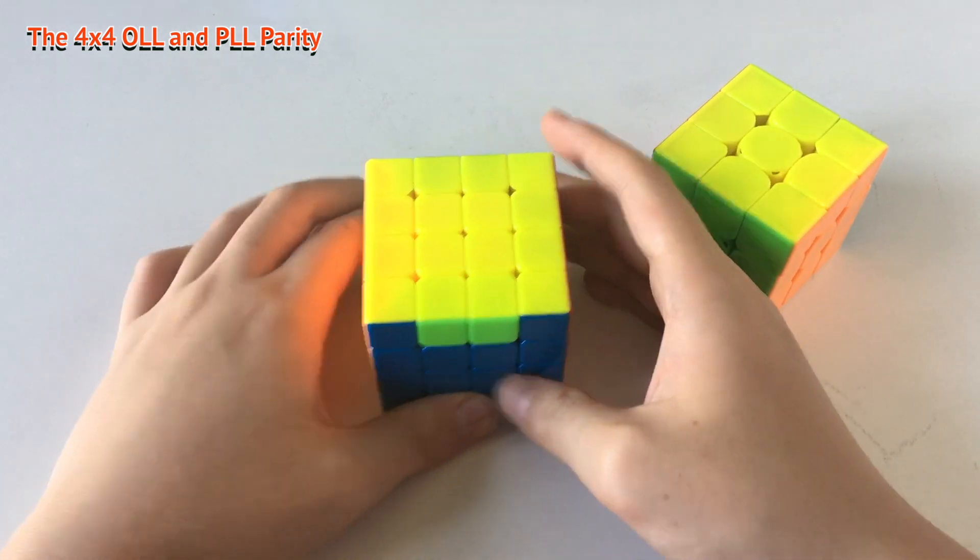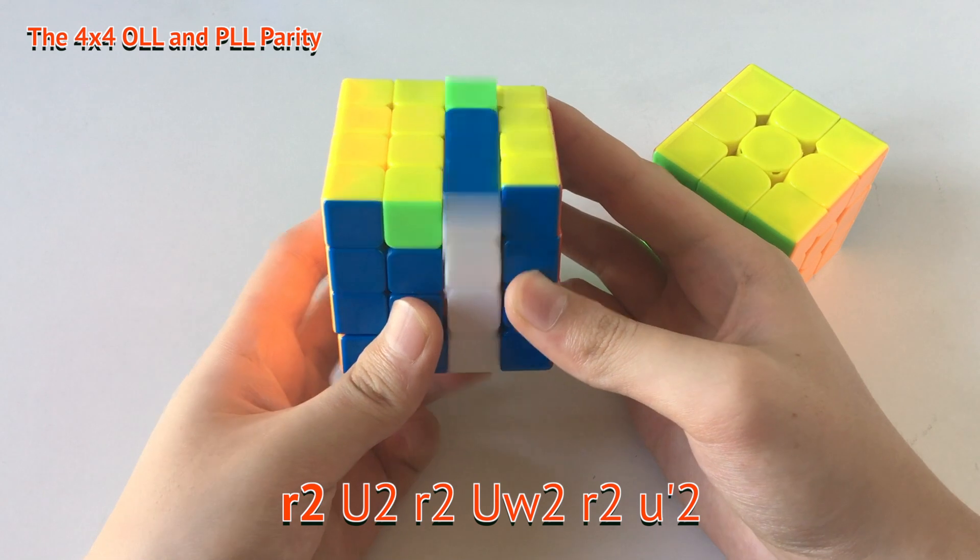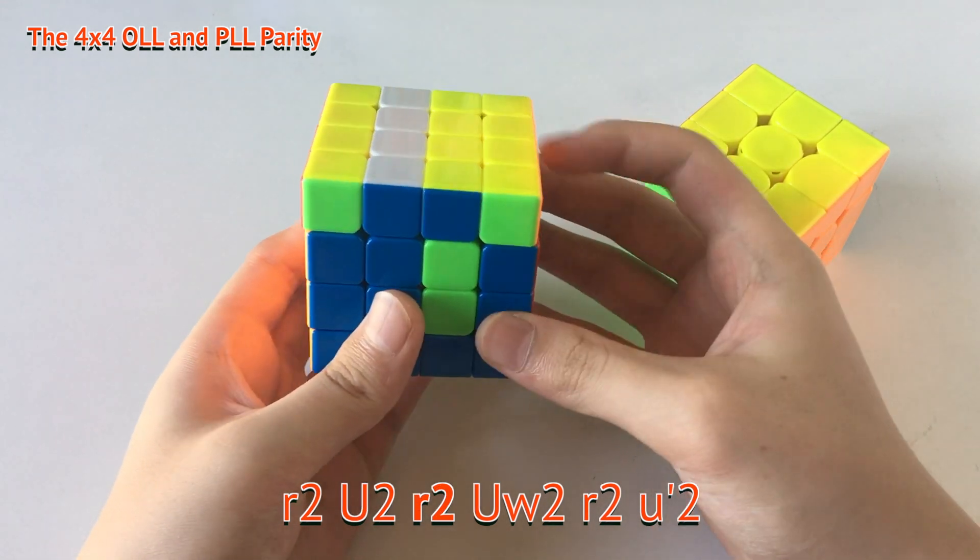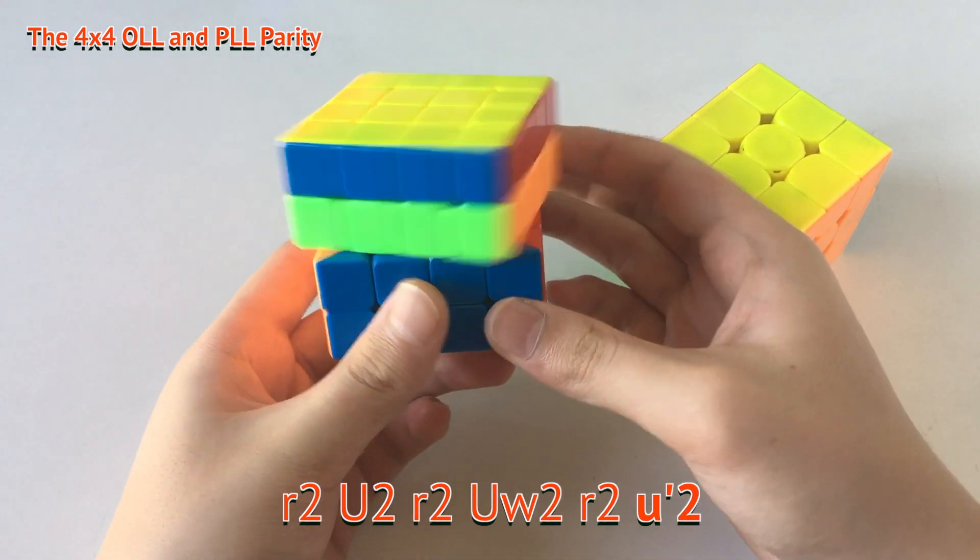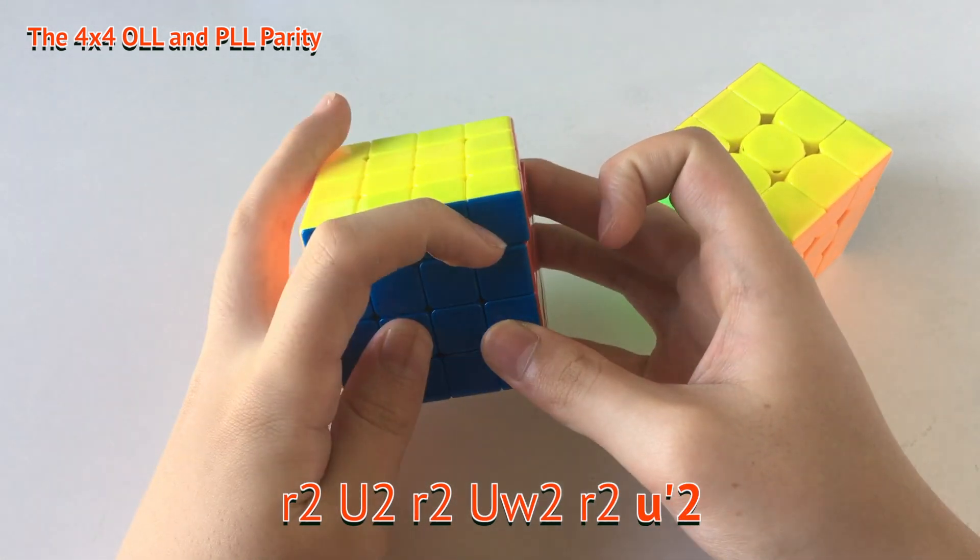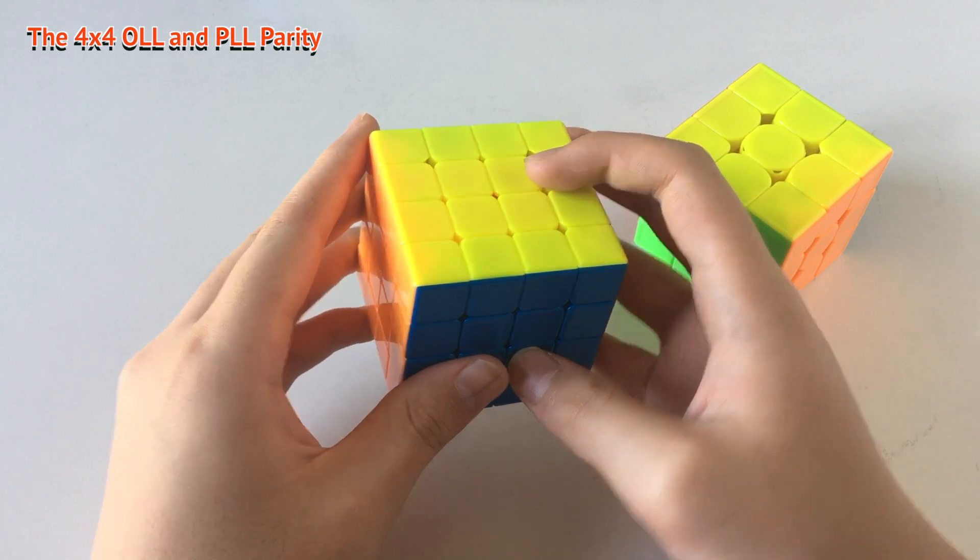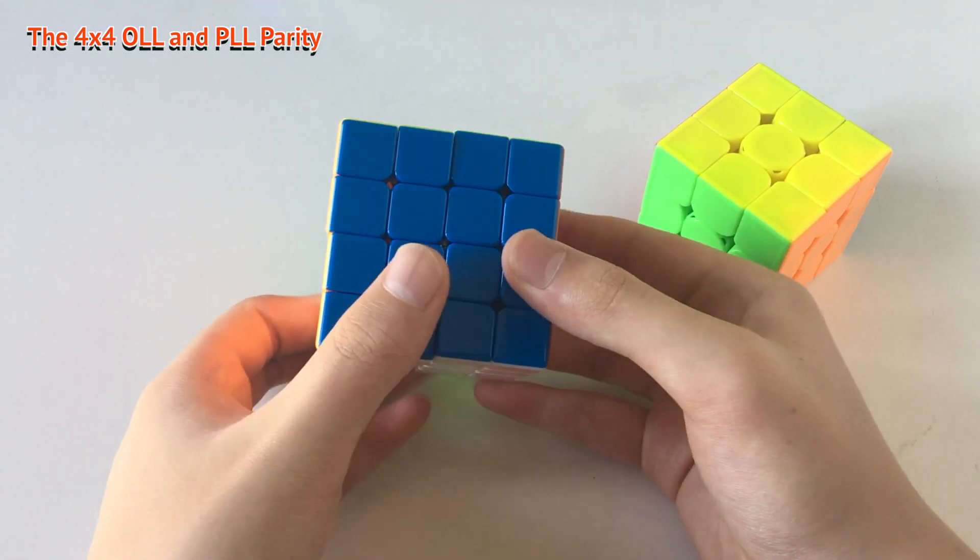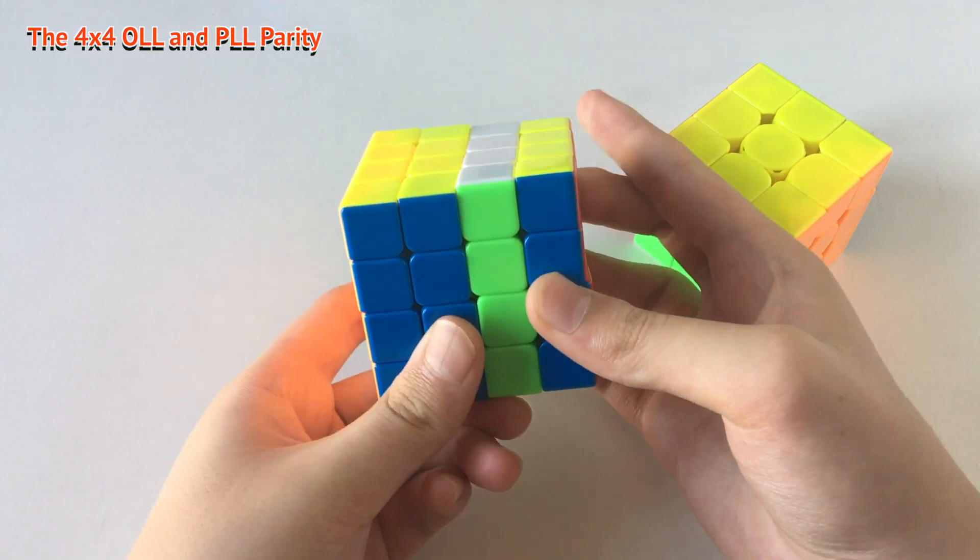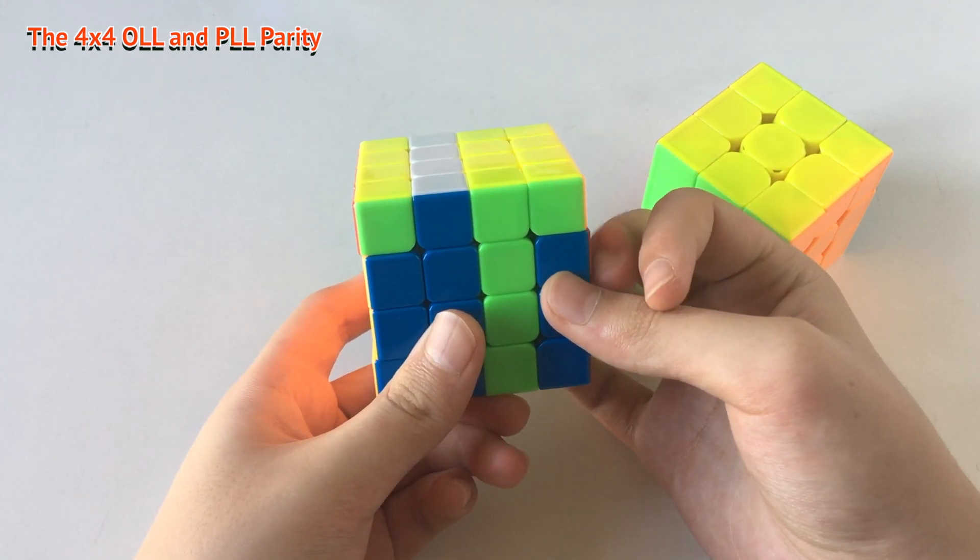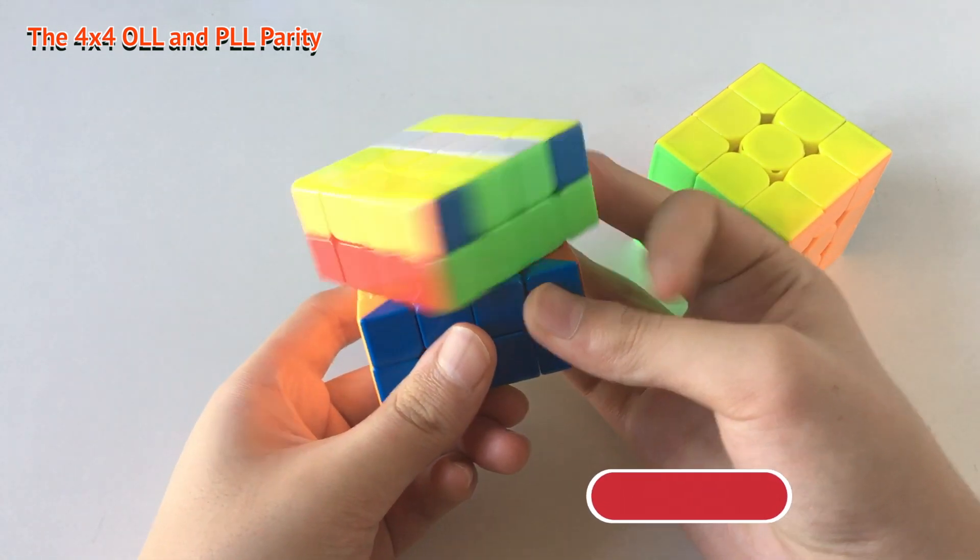So how do we solve this? I will have the algorithm listed here. So that is the 4x4 PLL algorithm. The finger tricks are basically having your ring finger, left ring finger, over here, and having your right hand index and middle fingers doing the U2 moves.